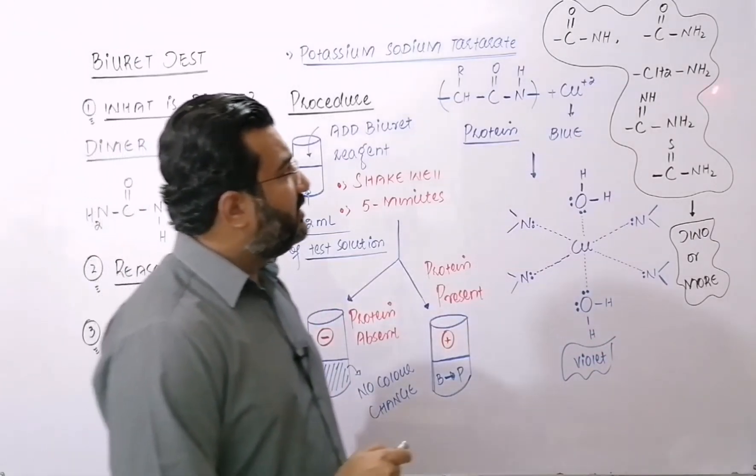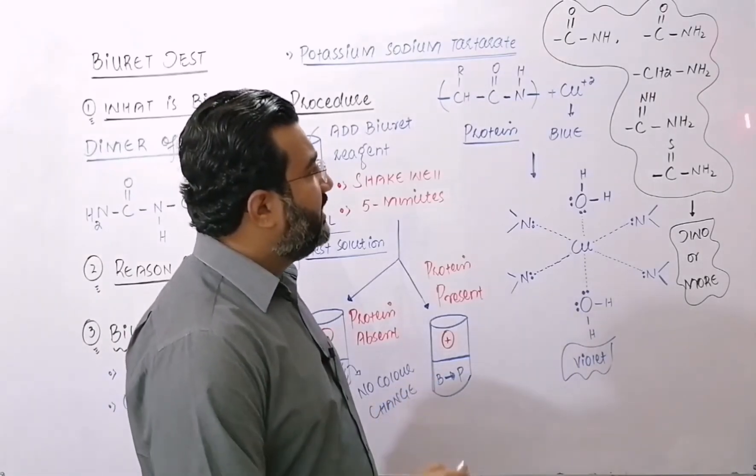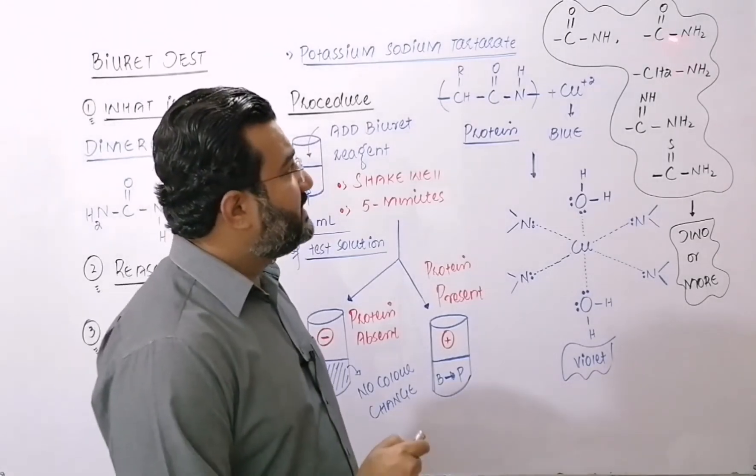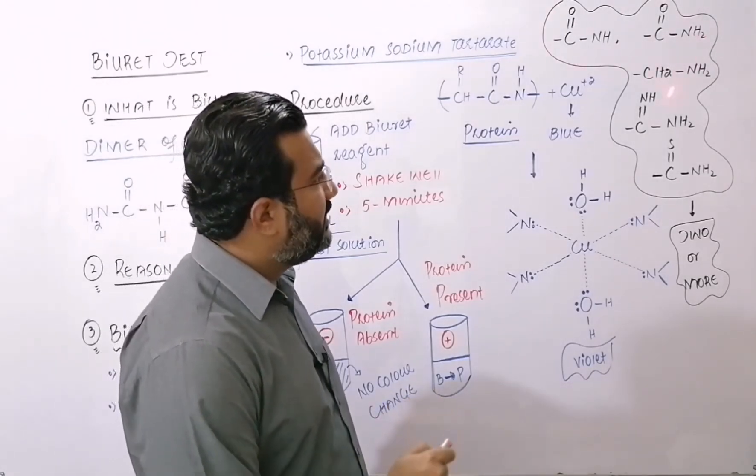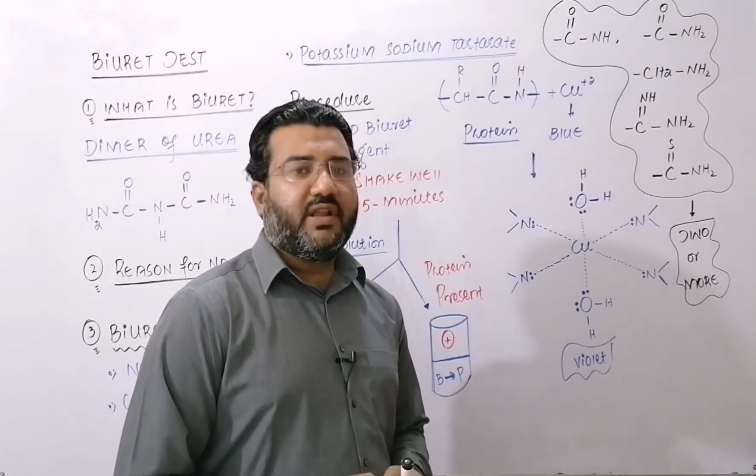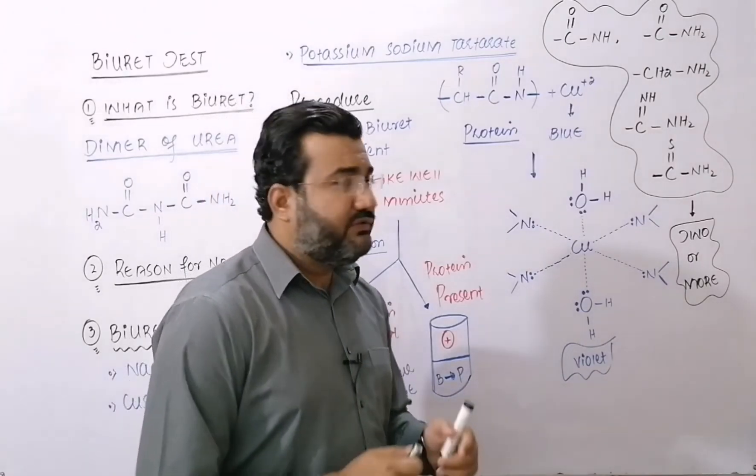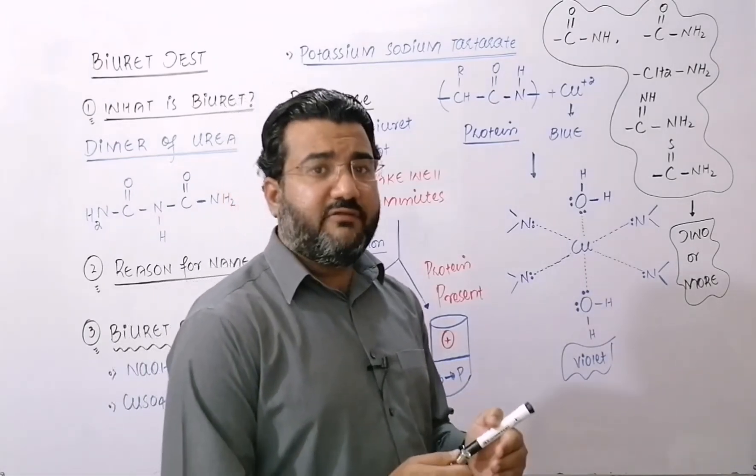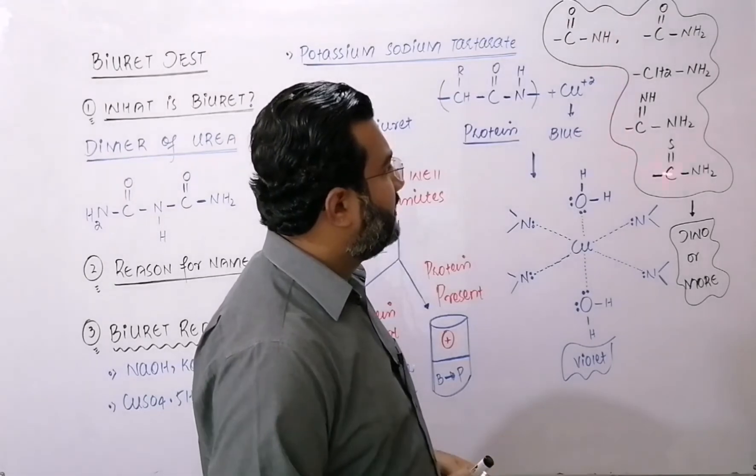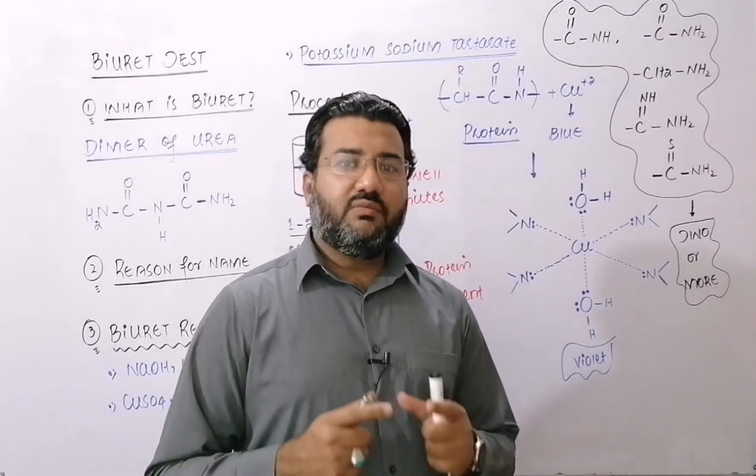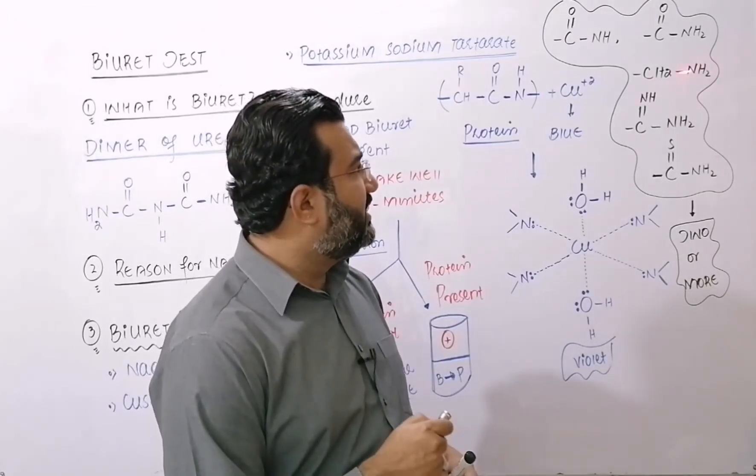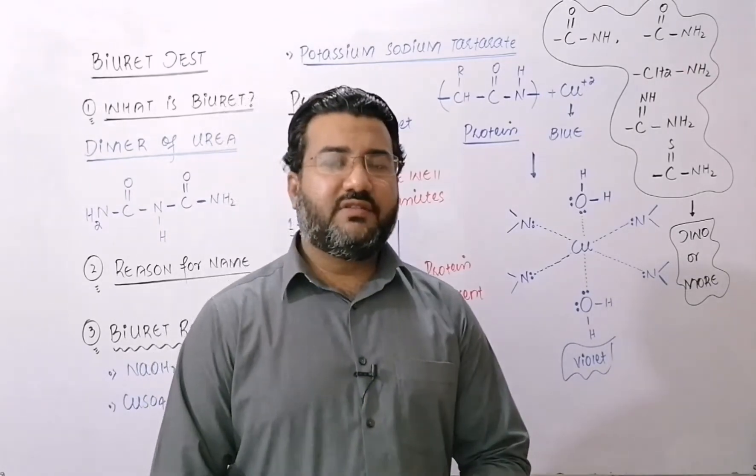My dear students, all those organic compounds that have these groups in their structure show positive biuret test, but if a single group, any of them, is present single in a compound, then that compound cannot show the biuret test. So for any compound to show the positive biuret test, that compound must have 2 or more than 2 of the following groups in its structure. So that's why amino acids, because they have a single CH-NH2 group, do not show positive biuret test.